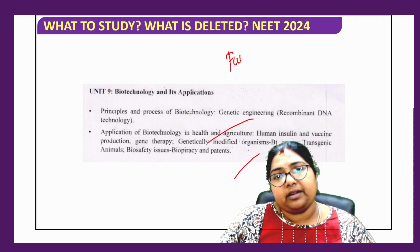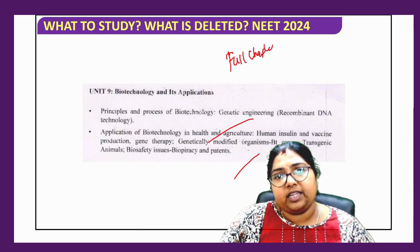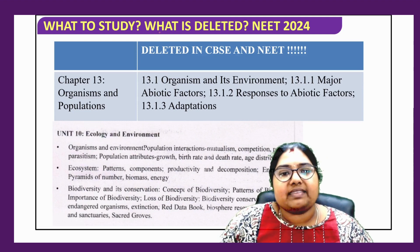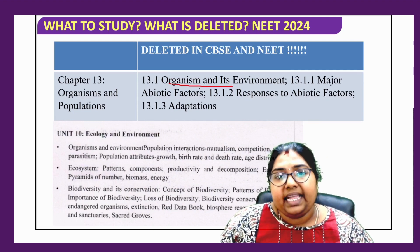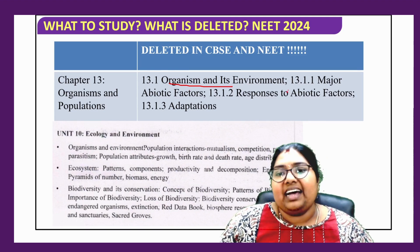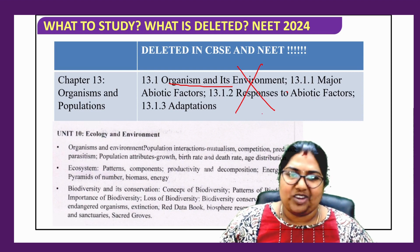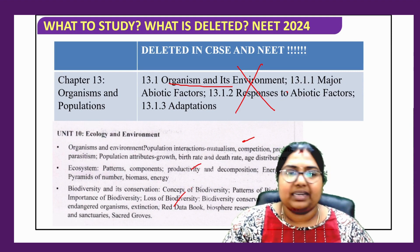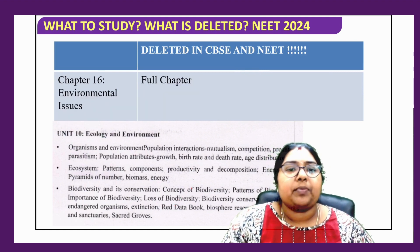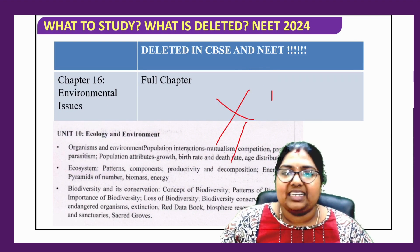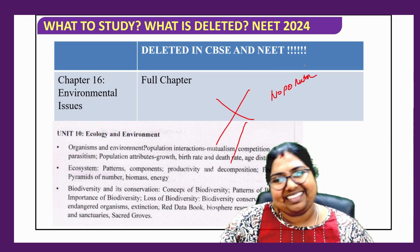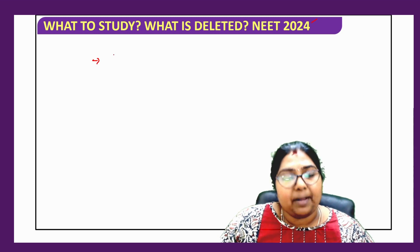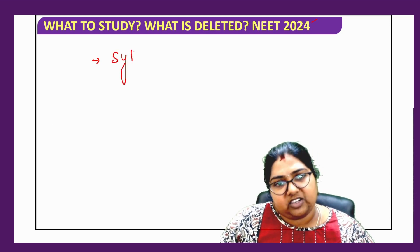Biotechnology is fully there, and in-depth questions will be coming from it. As far as ecology and environment is considered, Chapter 13.1 — organism and environment, abiotic factors, temperature, and responses to abiotic factors — is deleted. You have only population growth, ecosystem, and biodiversity. Environmental issues and pollution are totally deleted: no pollution, no biogeochemical cycles — none of that is in the NEET syllabus.